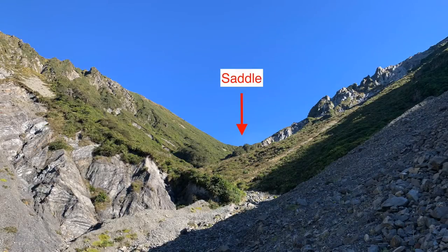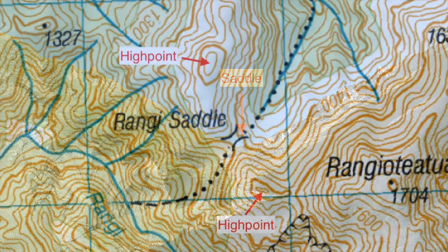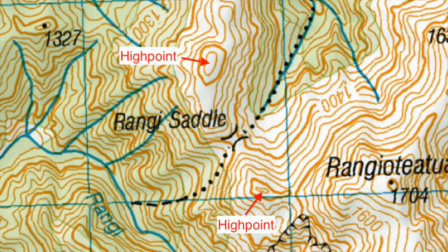A saddle is a low point between two high points, sometimes marked by a specific symbol. It can also be identified by U-shaped contour lines opposite each other with the saddle in between.